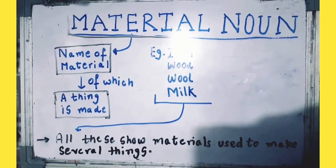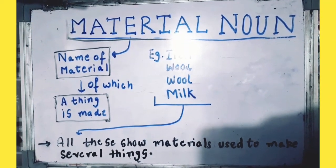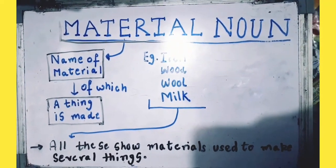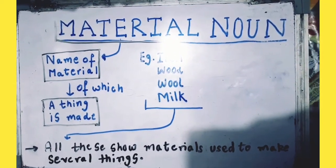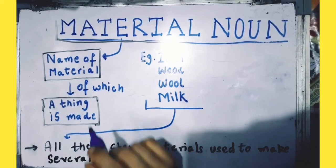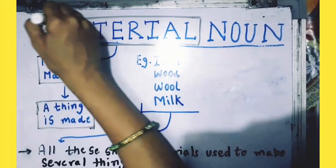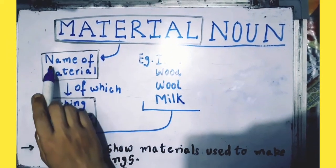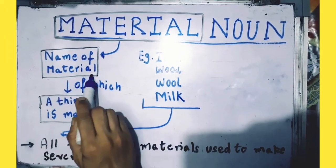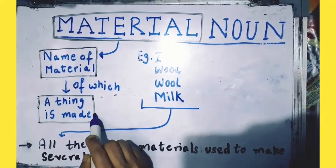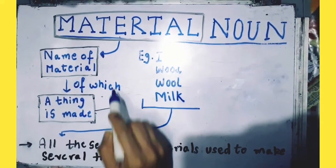Now let's study about material noun. A material noun is the name of material of which a thing is made.